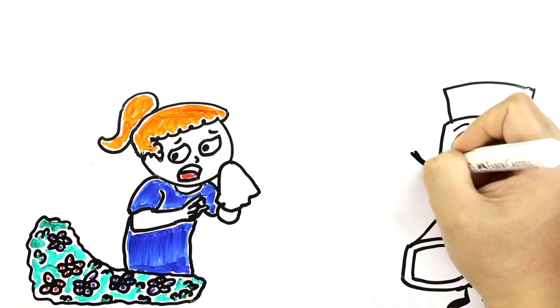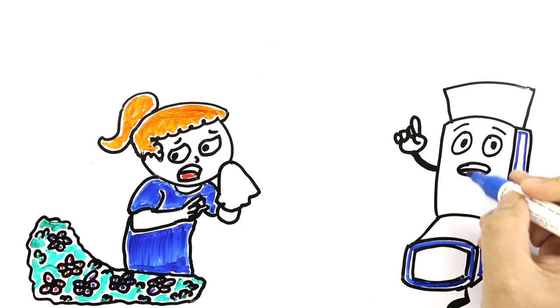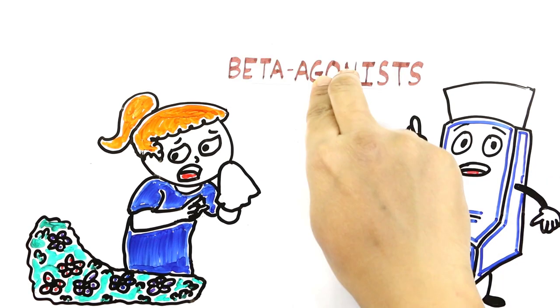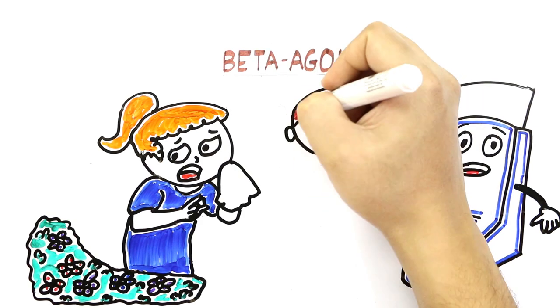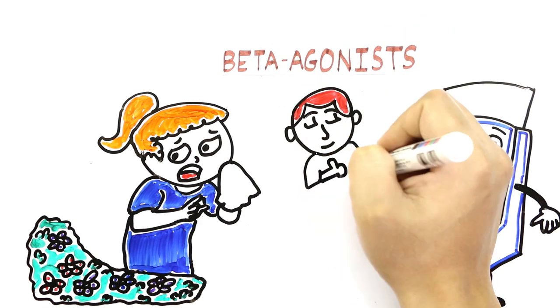Inhalers are of two types. The one responsible for immediate relief during an attack contains medication called beta agonists. Beta agonists reach the inflamed airways and relax the tissues, causing immediate relief.